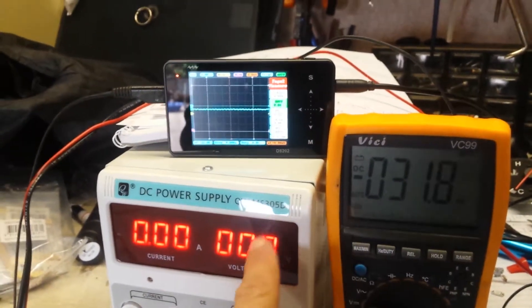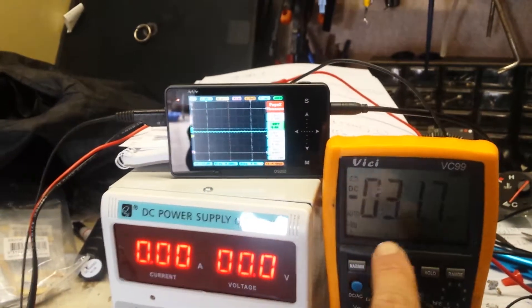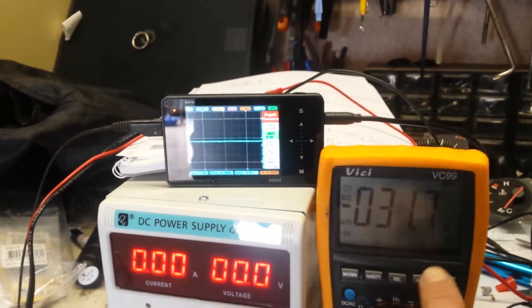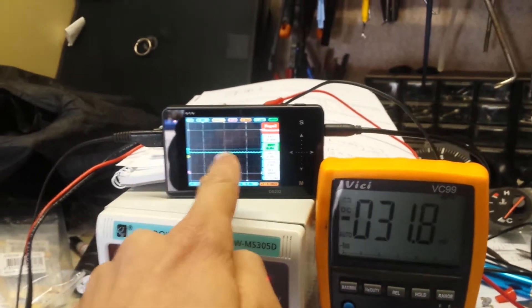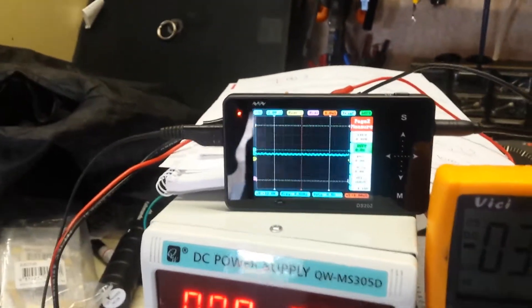So if you watch the output voltage here - sorry, the input voltage and then the output voltage - you can also see there's a tiny little bit of ripple on the scope.